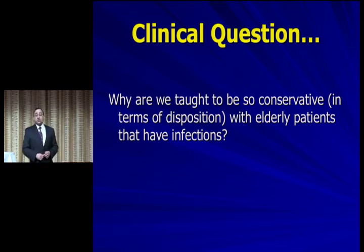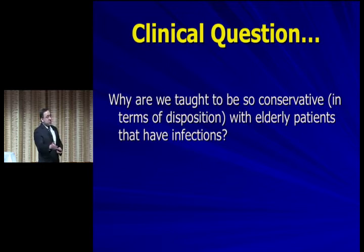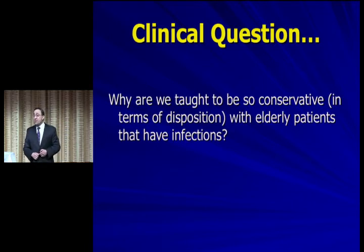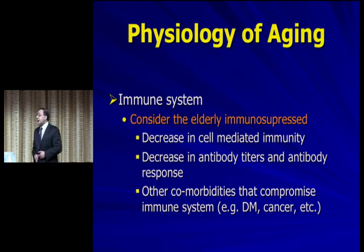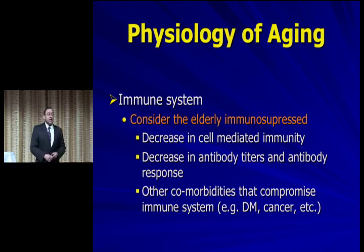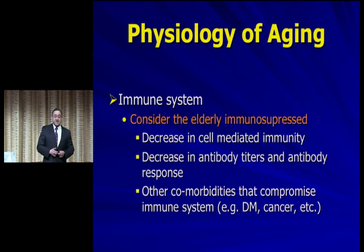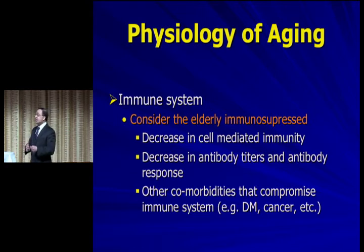Why are we taught to be so conservative in terms of disposition? A young person with a unilobar pneumonia gets antibiotics and goes home, but an elderly patient with unilobar pneumonia almost always gets admitted. Key point number two: all elderly patients should be considered immunocompromised — just like a patient on steroids or chemotherapy. They have decreased cell-mediated immunity, decreased antibody titers and response, and many comorbidities like diabetes or cancer that put them at even higher risk.